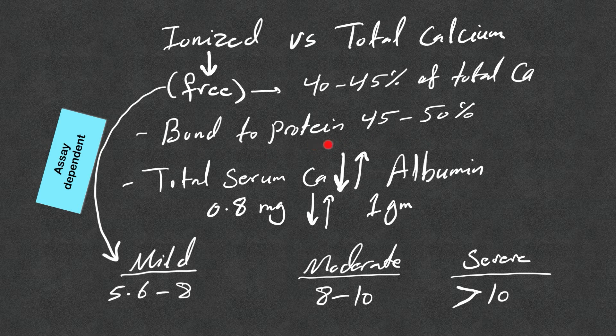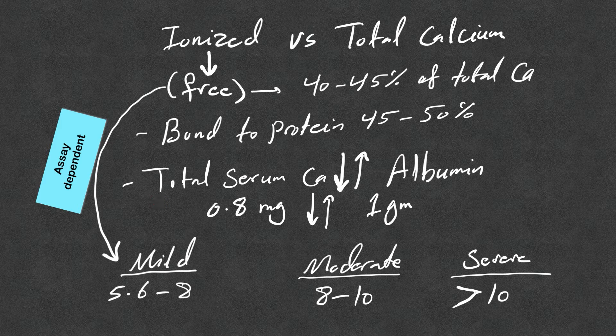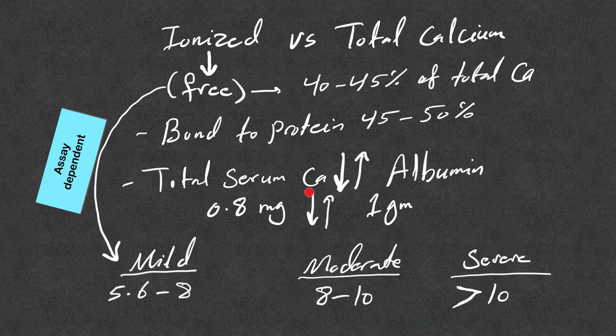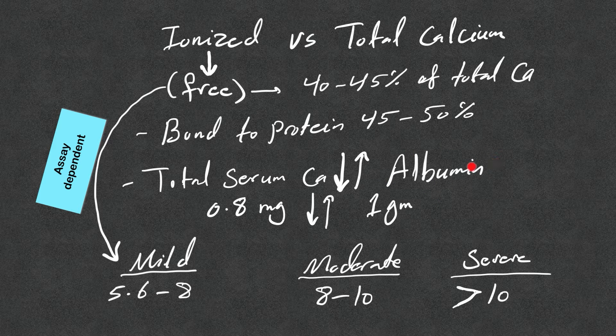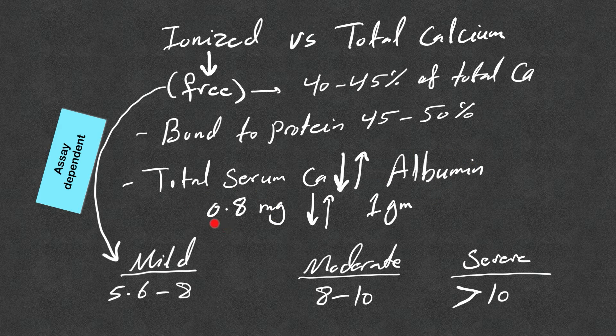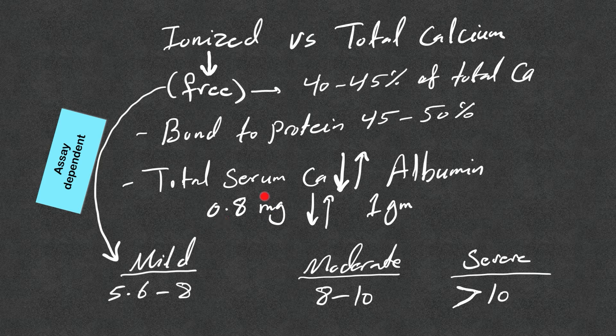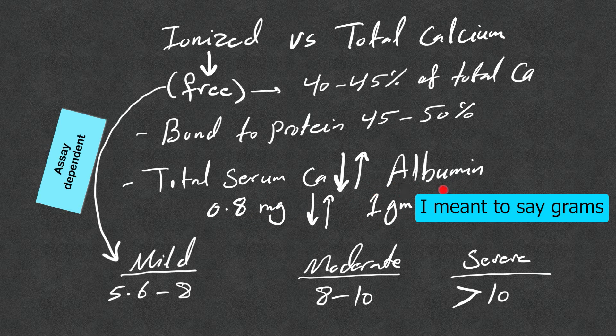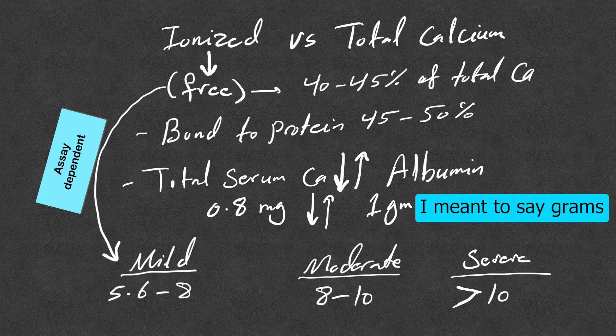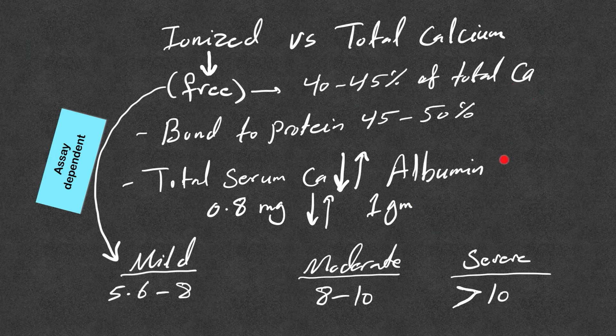It's very important to understand that total serum calcium goes up and down as the albumin level goes up and down as well. The calcium level goes up or down by 0.8 milligrams with each one milligram up or down of albumin. So it's very important to correct the total calcium with albumin level.